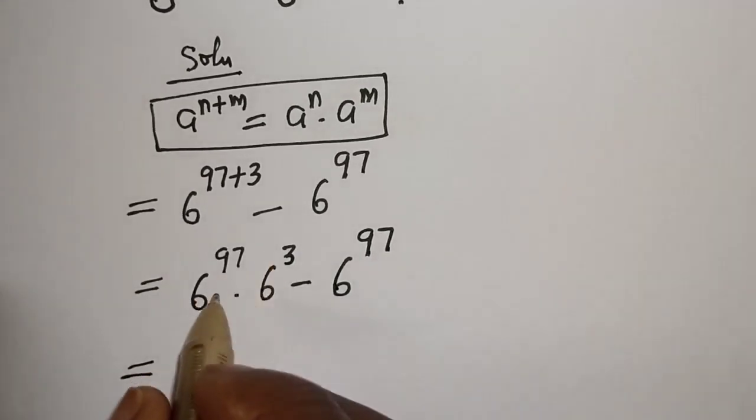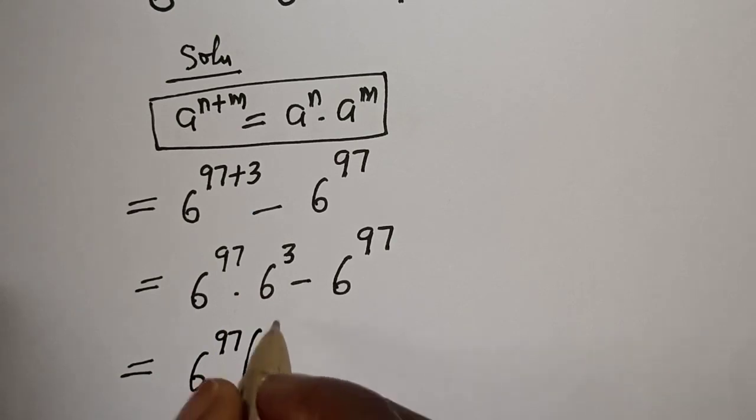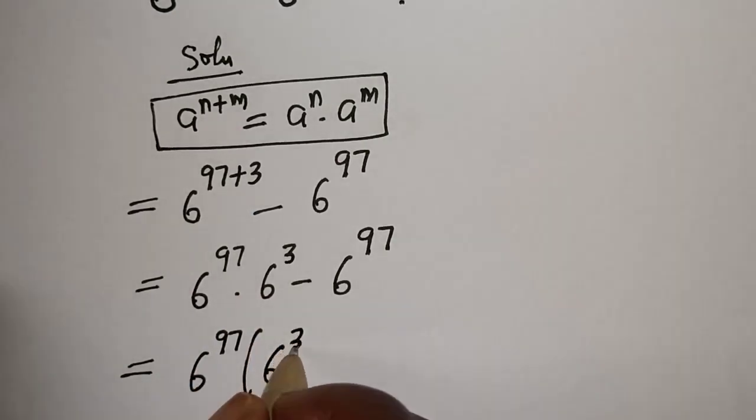Then from here, 6 raised to power 97 is common. Let's bring it out. 6 raised to power 97 in brackets, we have 6 raised to power 3 minus 1.